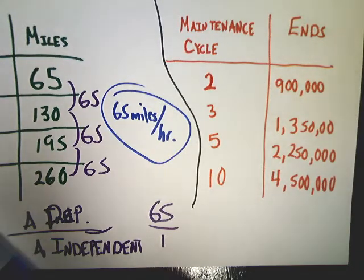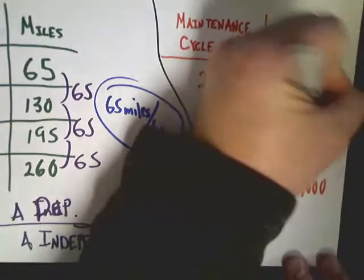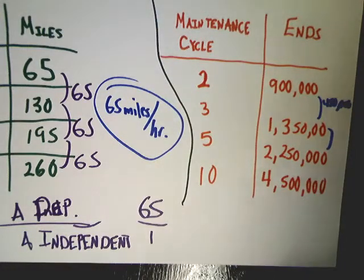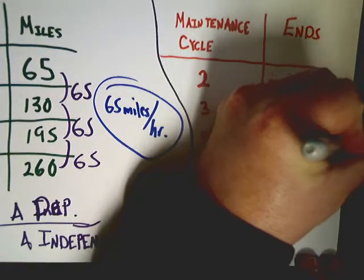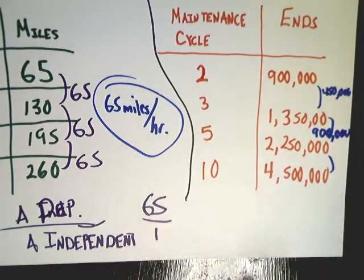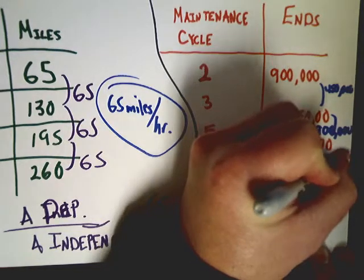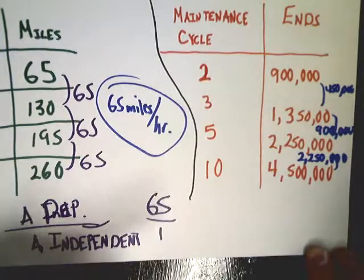So, if I was looking at the change here, if I did 1,350,000 minus 900,000, I end up with 450,000 as my change. If I'm going to do the change here from 2,250,000 and 1,350,000, I'm going to look at something like 900,000. And for the last one, this is a pretty big change. So, 4,500,000 to 2,250,000. The change is actually 2,250,000.